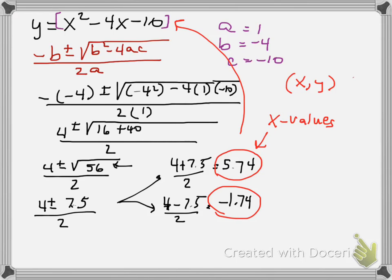If we put in 5.74 for x, we could solve that and get a y value, and that would give us a coordinate of 5.74 and whatever that y value is. And we could do the same for this one, and it would give us a coordinate of negative 1.74 and whatever the corresponding y value is.